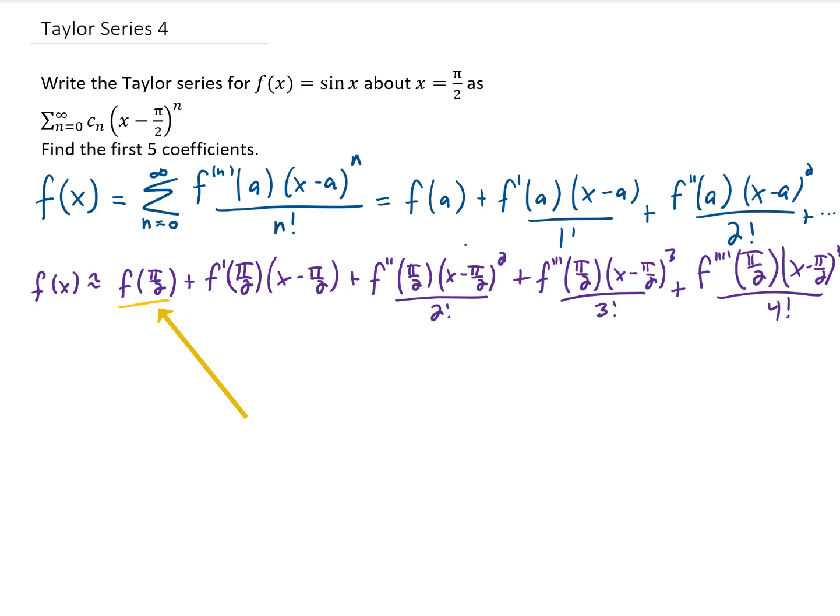f of pi over 2 can be found simply by plugging pi over 2 into the x value of the given function. We have to remember that sine of pi over 2 is 1.